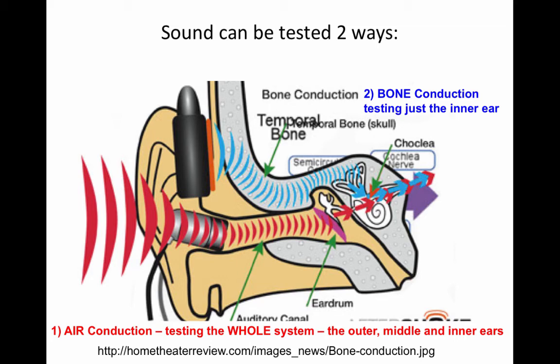You also test hearing through bone conduction, where a vibrator is placed on the mastoid bone where the cochlea sits. The cochlea is directly vibrated, and the fluid in the cochlea and the inner ear creates the sound, and the message is then sent to the brain.